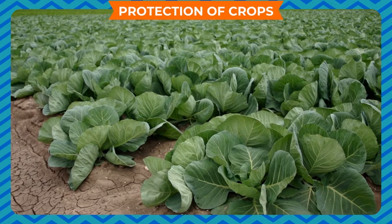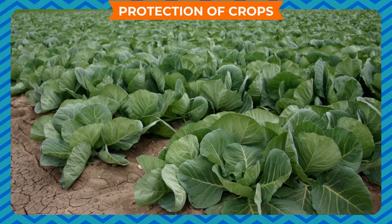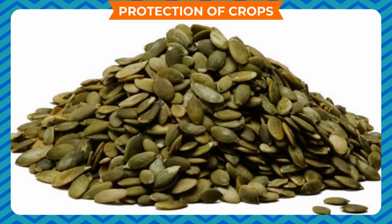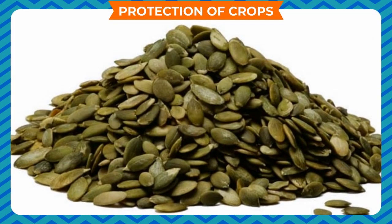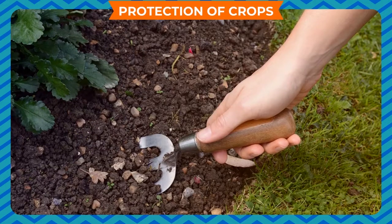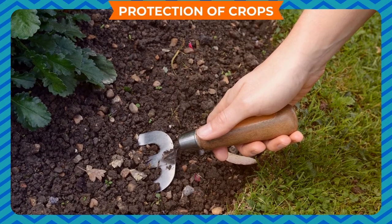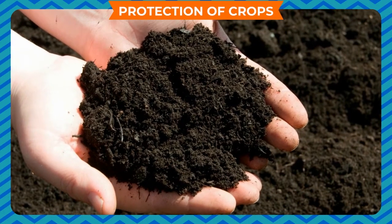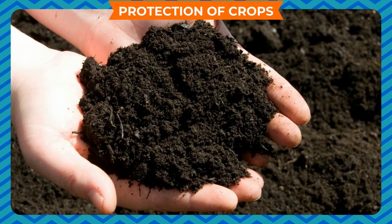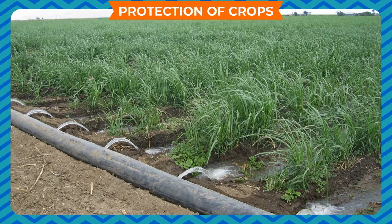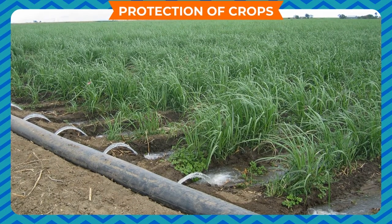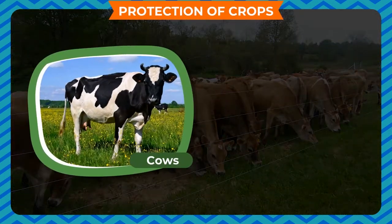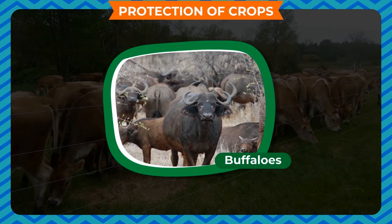Protection of crops: to grow healthy crops, farmers should keep a few things in mind. Only healthy and ripe seeds should be used for sowing. The soil should be prepared properly by turning it over to loosen it. Rich manures and fertilizers must be added to the soil, and the soil must be irrigated sufficiently at the right time.